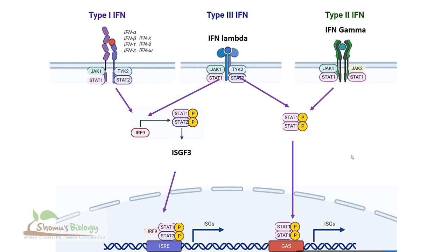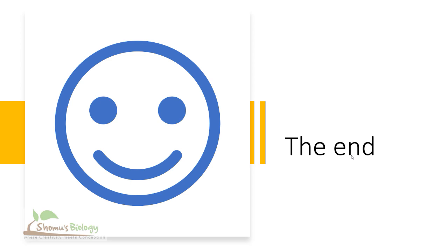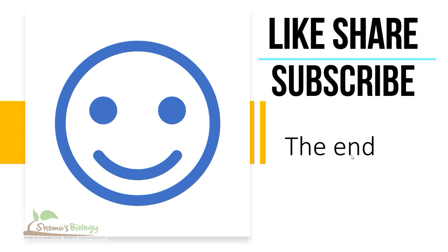Basically, the type 3 interferon receptor — the interferon lambda receptor — can activate specific target genes, including the pathways followed by both type 1 and type 2 interferon receptors. That's all about the interferon receptor and interferon gamma signaling pathway. If you like this content, please hit the like button, share this video with your friends, and subscribe to this channel to get more videos like this in the future. Thank you.